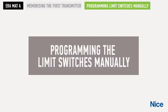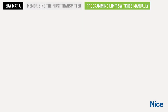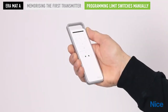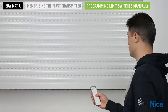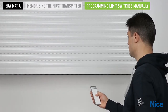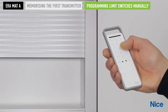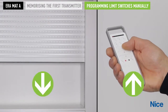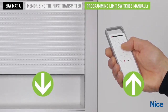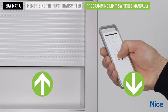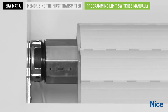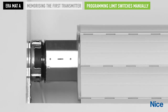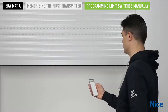Programming the limit switches manually. Position the rolling shutter at the midpoint. Initially, the motor might move in the opposite direction to the one indicated on the arrow key of the transmitter. The motor will not automatically associate the correct direction until both the upper and lower limit switches have been set.